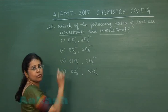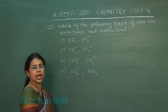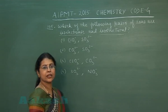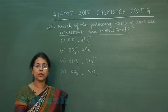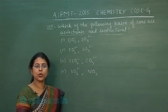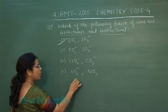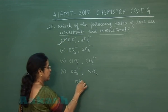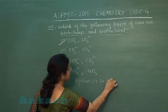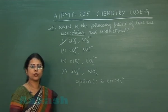Carbon and sulfur are from different periods; chlorine and carbon are from different periods; sulfur and nitrogen are from different periods. So those compounds cannot be iso-electronic. This means the first option is the correct option.